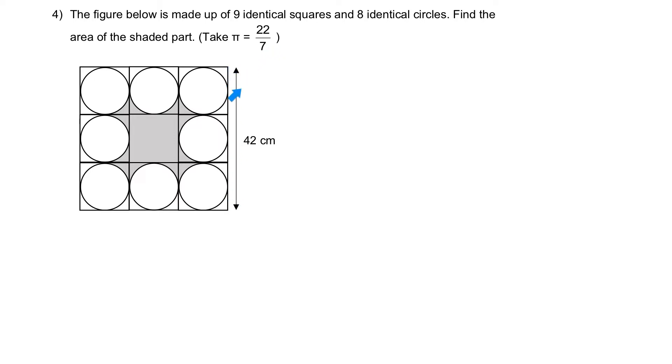The length of the square is 42 cm, which is three diameters. Hence we can see that one diameter is 14, which means the radius is 7. Alright, so let's proceed.